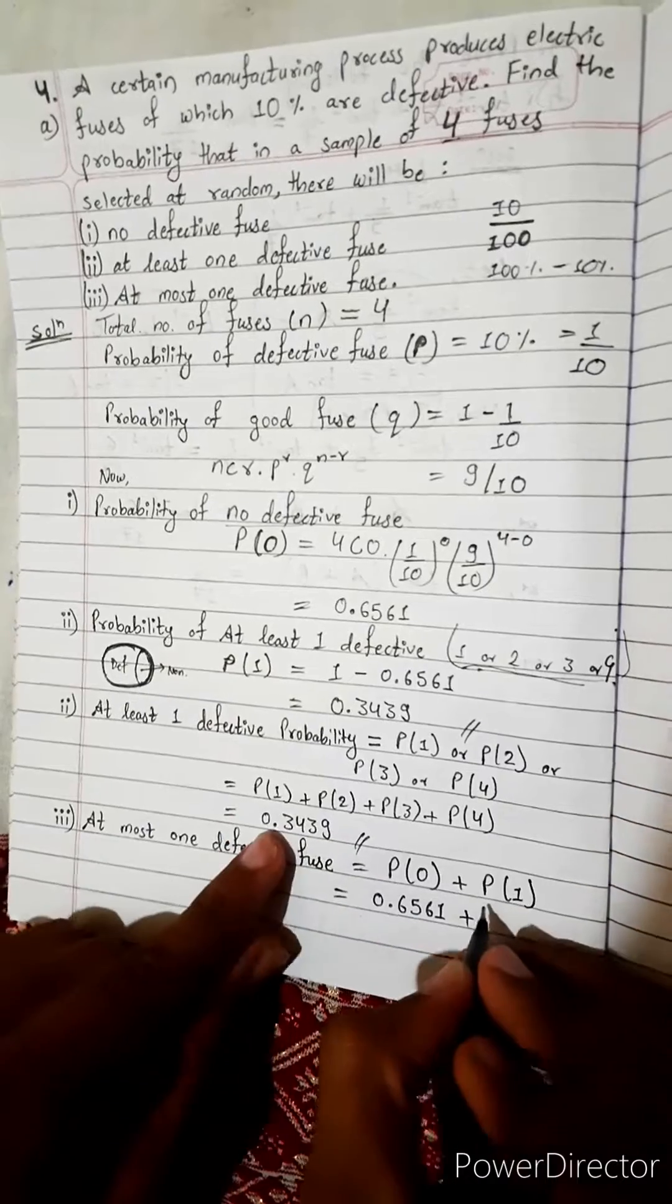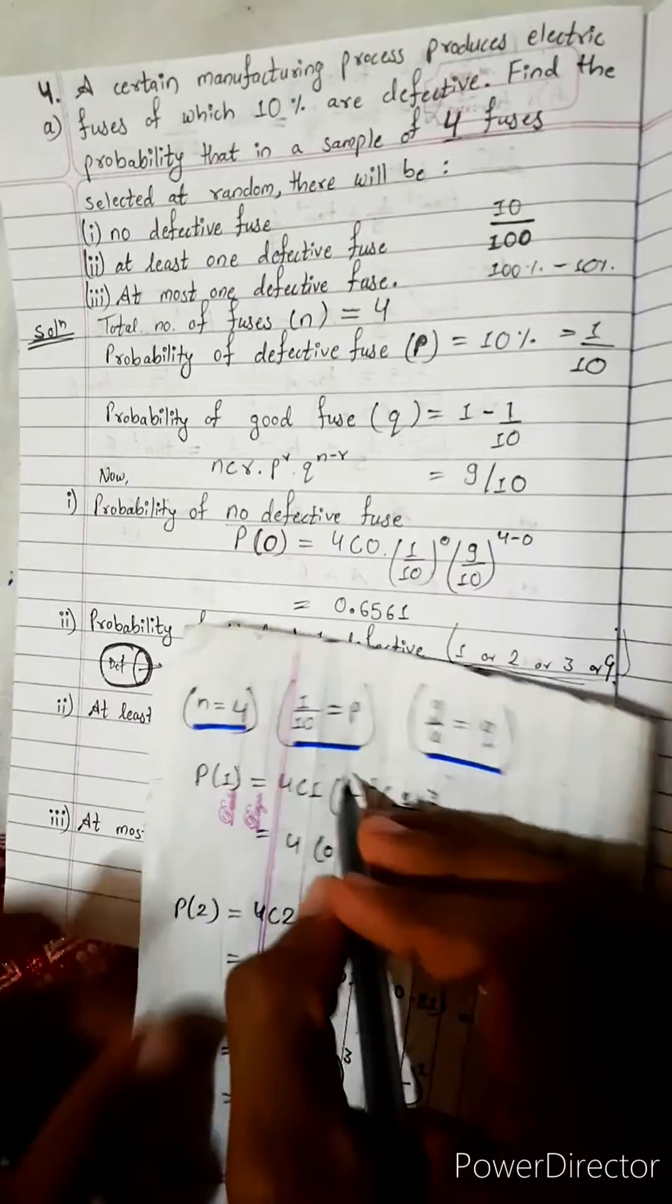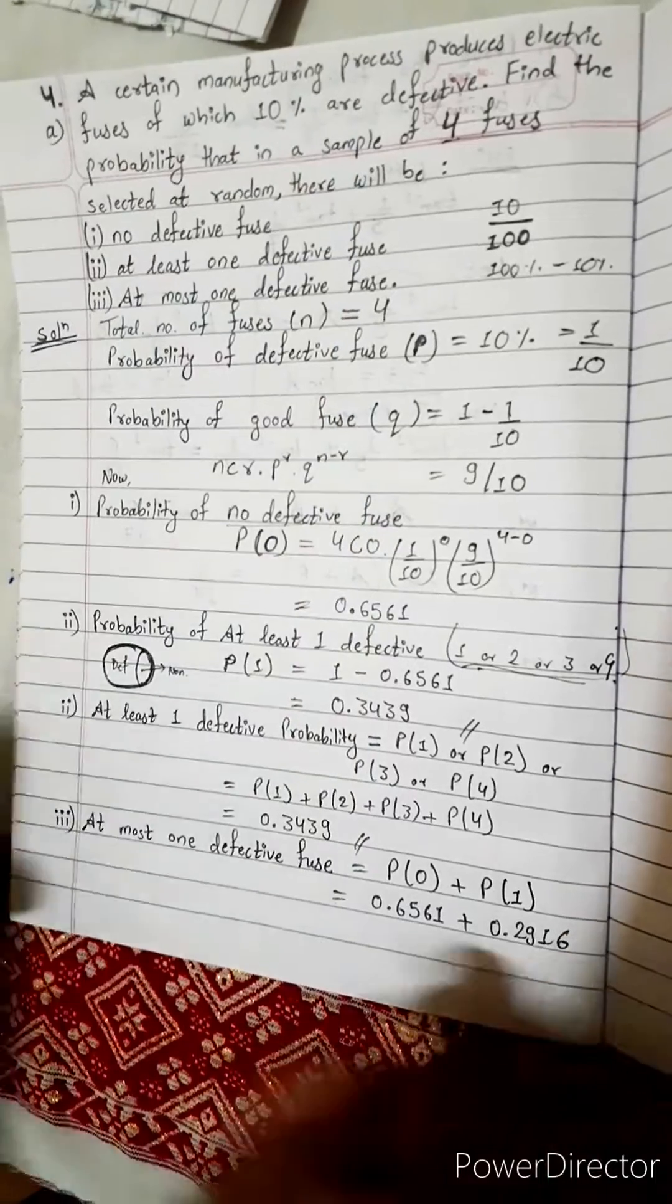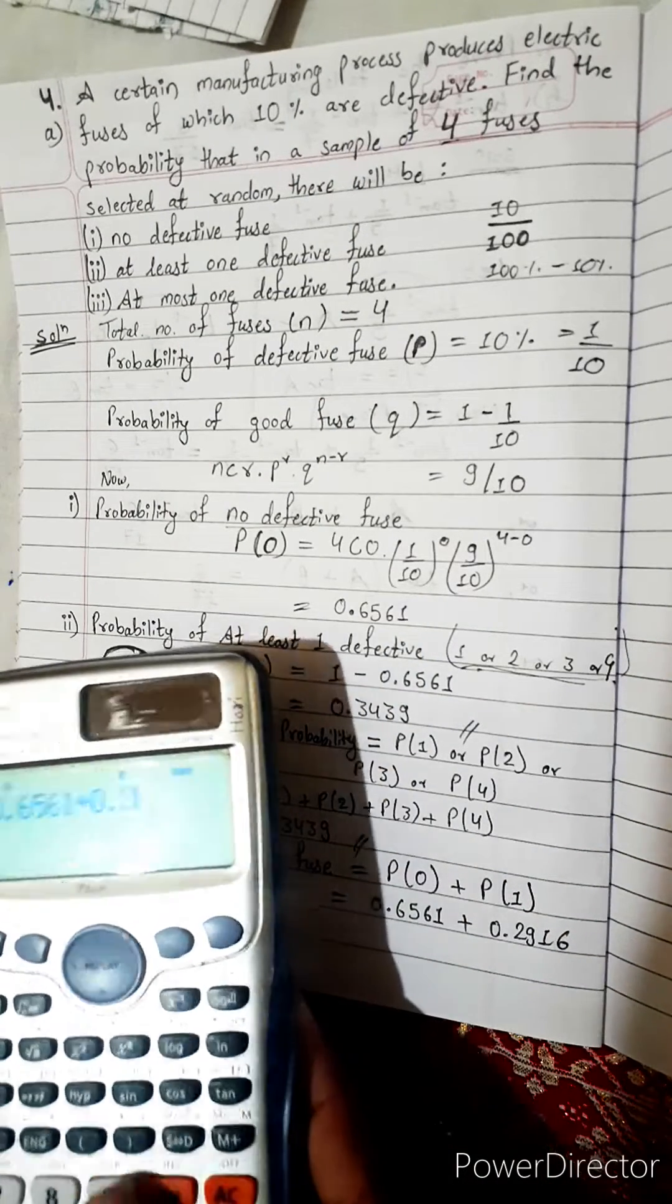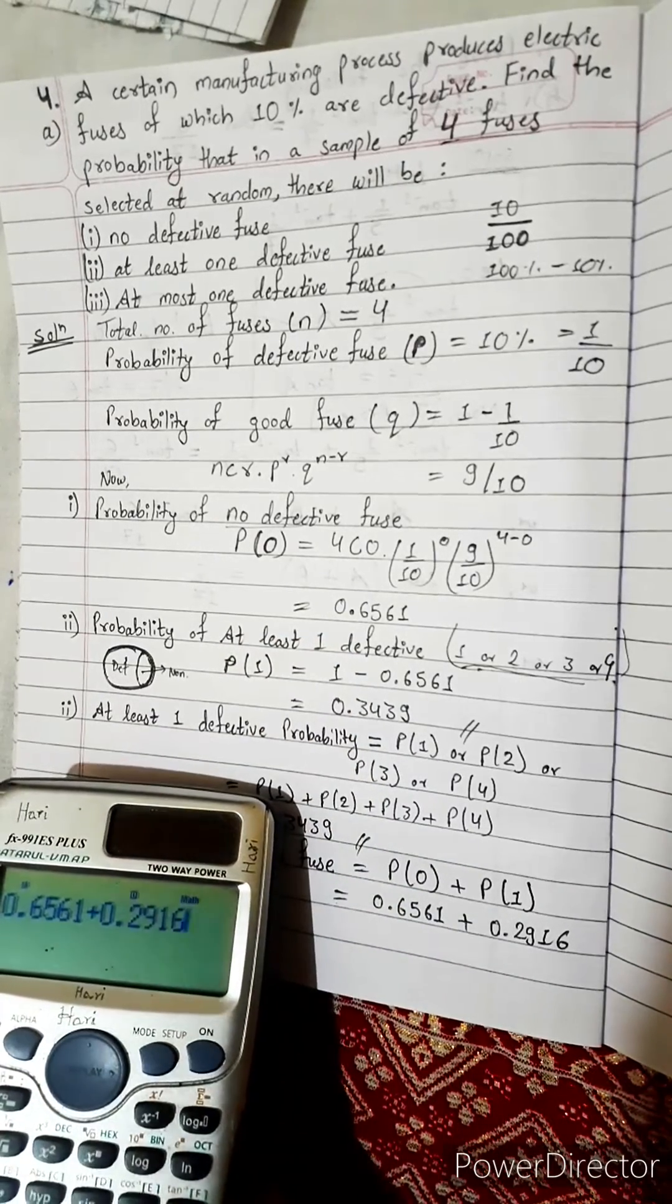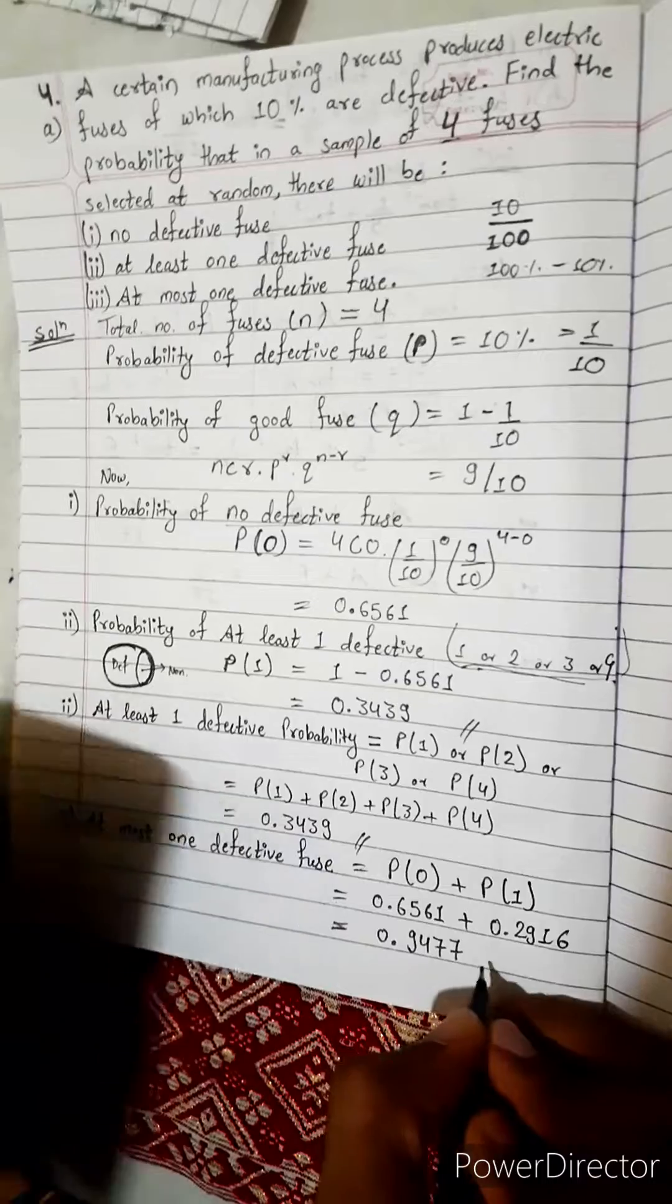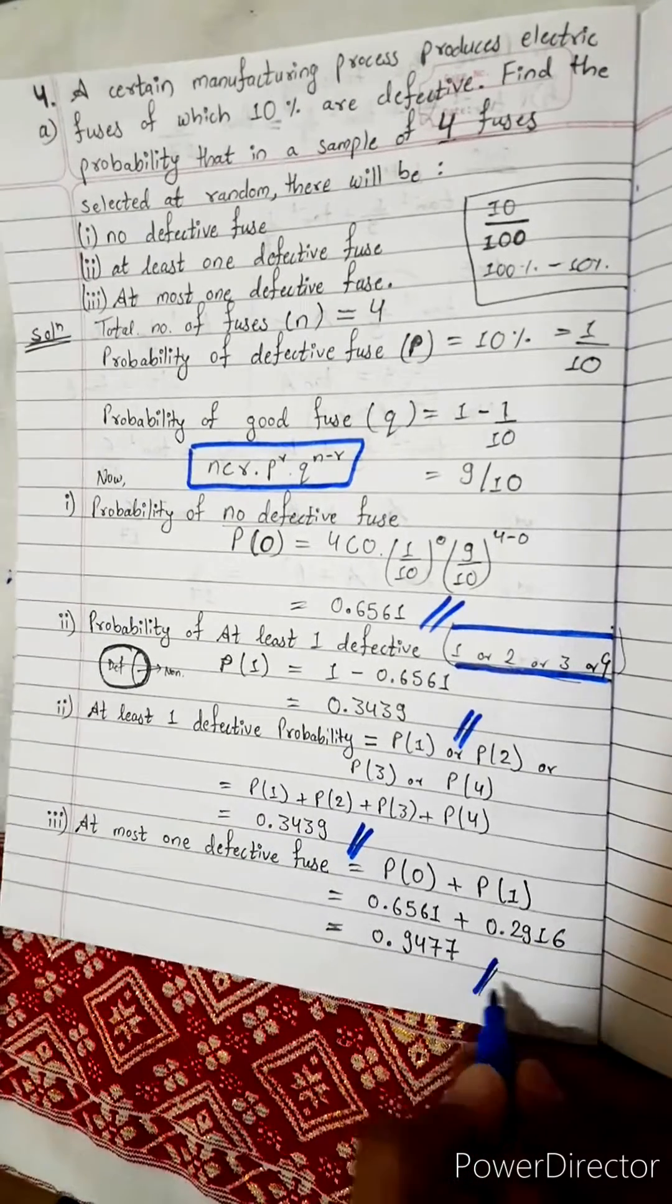0 defective and 1 defective. Probability of one defective is 0.2916. Let's add this: 0.6561 plus 0.2916. Its probability is very much higher, 0.9477. This means it is very probable.